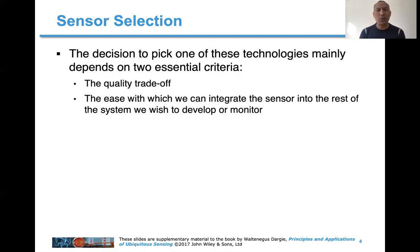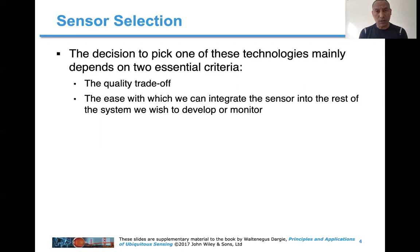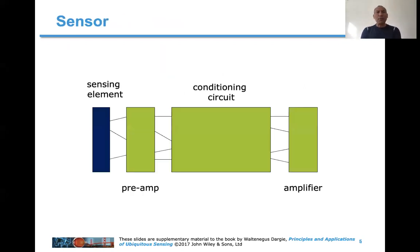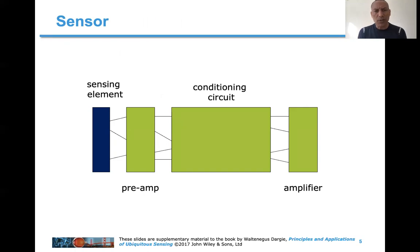Capacitive sensors are extremely widely used because of their simple construction. They essentially transform the dielectric material of the process we want to interface, and in doing so they change the capacitance of a capacitor. They have a wide range of applications, are relatively cheap, and can be quite reliable. Before we delve deep into the selection or qualification process of a sensor, we have to agree on what we mean by 'sensor.' A sensor is not really a single object or a single component — it is a collection of components.